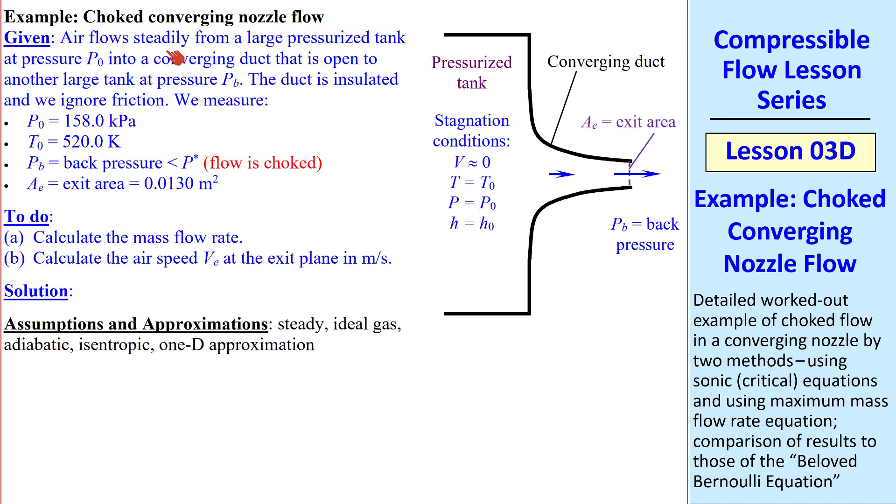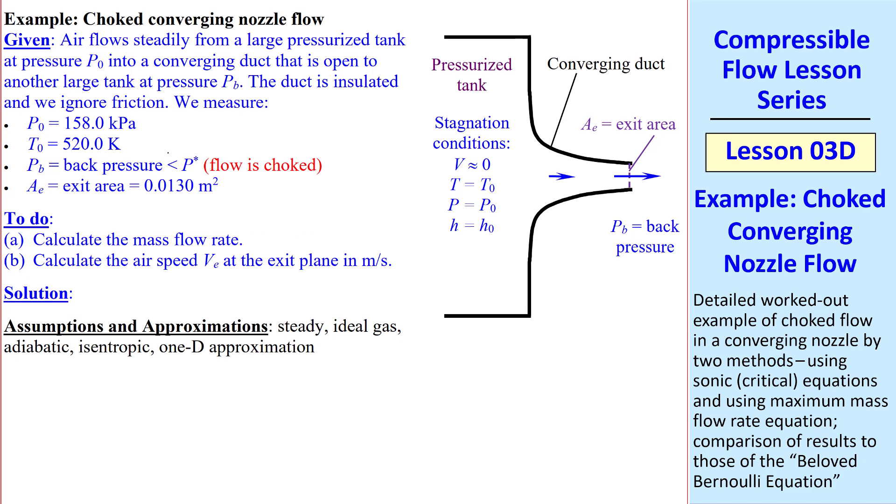In this problem, air flows steadily from a large pressurized tank with these stagnation conditions through a converging nozzle or duct with exit area AE and backpressure PB. I don't actually give PB, since as long as PB is less than P star, the flow is choked.